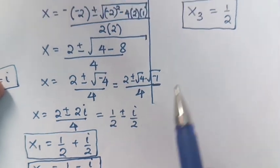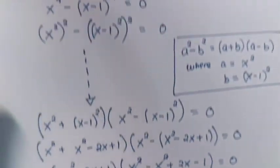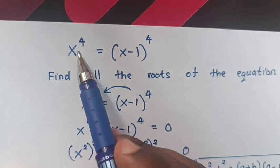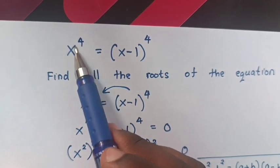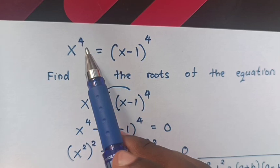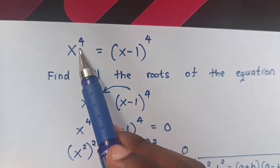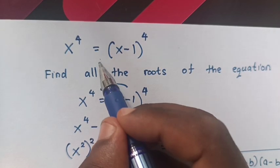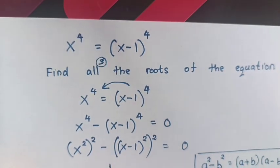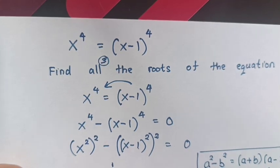We can see we have 3 solutions. This is because our question has a power of 4. When it is power of 4 we have 3 solutions — 4 minus 1 is 3 — that's why we have 3 roots. If it is power of 5 we will have 4 roots, and so on.